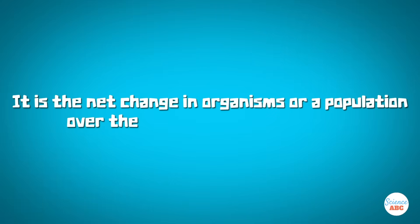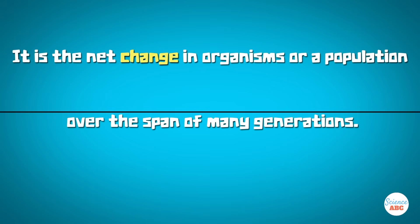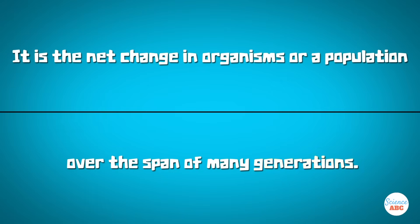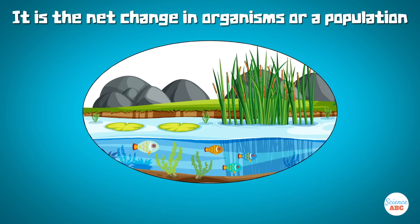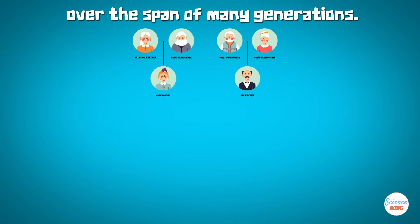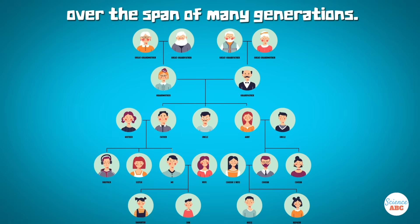Evolution is the net change in organisms or a population over the span of many generations. We can break this definition into two parts: the net change in organisms or a population, and one that occurs over the span of many generations. The first part reveals what and where these changes happen — the mechanisms of evolution, like natural selection. The second part tells us two things: the time it takes for organisms to change, and, less obviously, that the process involves reproduction.